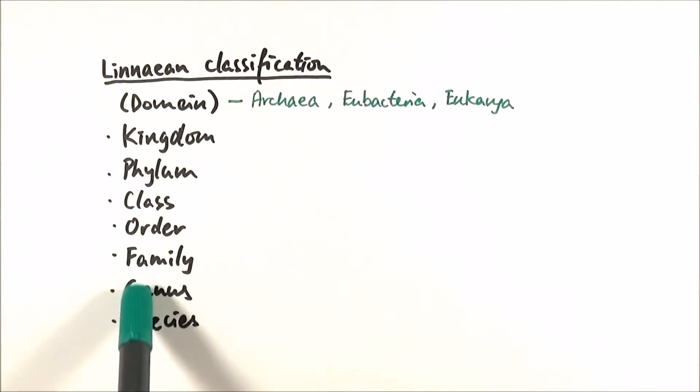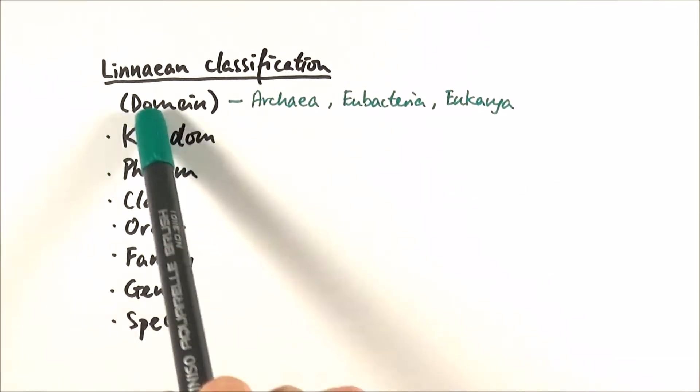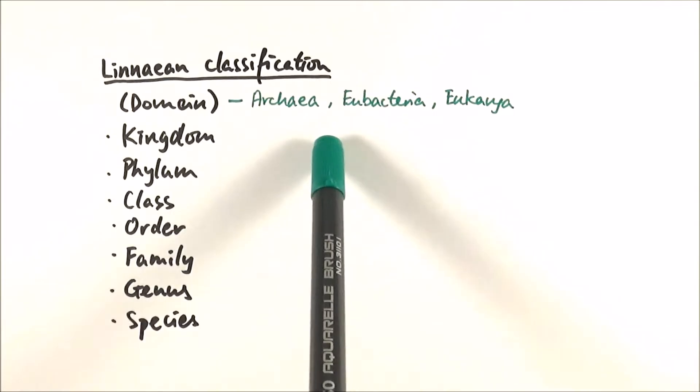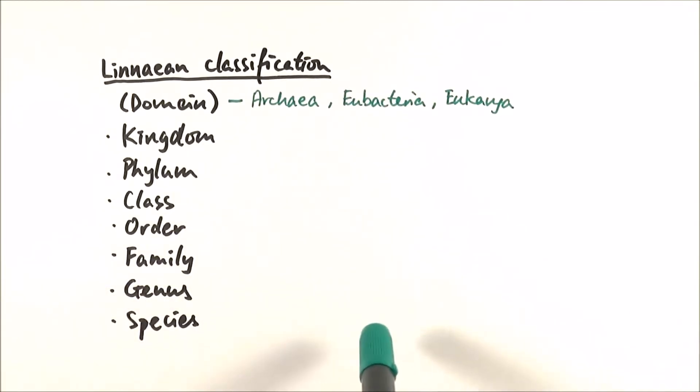In the exams you need to be able to put them in the correct order. So what might often happen is they give you a table with this classification system in the correct order and perhaps a relevant name of a particular organism. They will blank out some parts of the classification and ask you to put the correct one in the correct space.